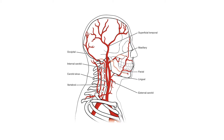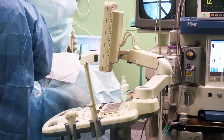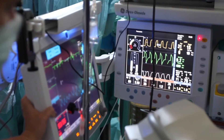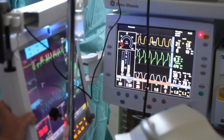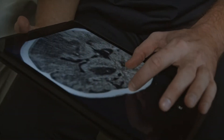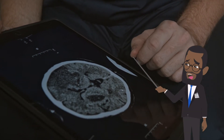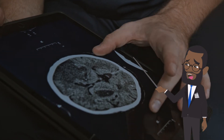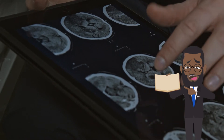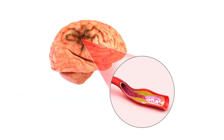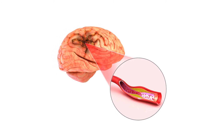Trauma to the carotid is more common than to the vertebral artery. It is responsible for 1% of all blunt trauma admissions and 7% of trauma admissions with an injury severity score of 16 or more. It is a potentially devastating disease if left untreated, with a mortality of about 23 to 28% and severe neurologic morbidity of about 48 to 58% if untreated. Screening and treatment reduces stroke incidence and morbidity and mortality.